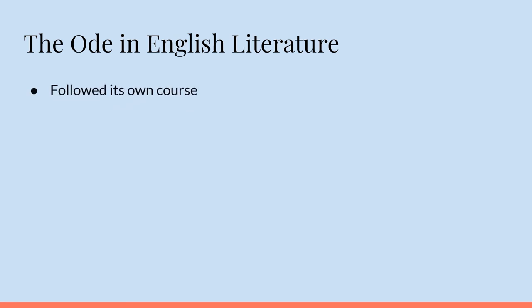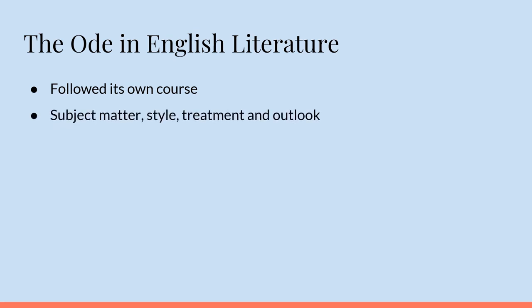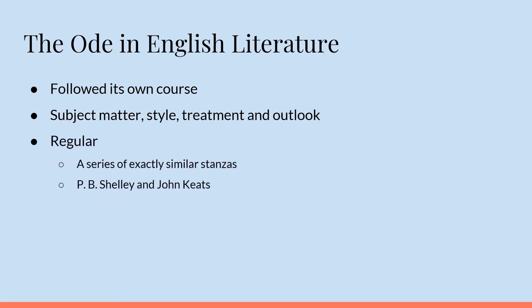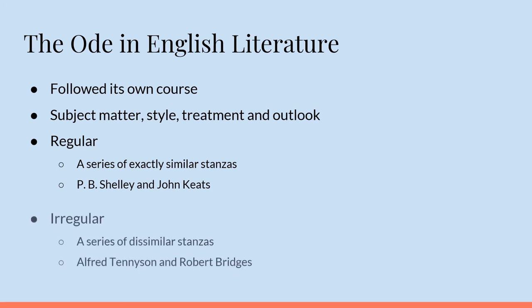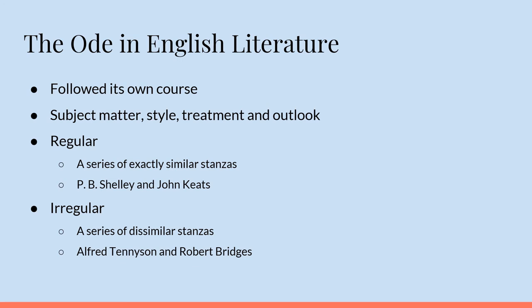Except for a few attempts in the Pindaric form or Horatian form, the English ode followed a course of its own as regards subject matter, style, treatment and outlook. It is either regular, consisting of a series of exactly similar stanzas like the odes of Shelley and Keats, or irregular when each stanza follows a different arrangement, as in Wordsworth's Immortality ode and several of the odes of Tennyson and Robert Bridges.